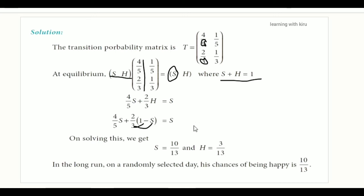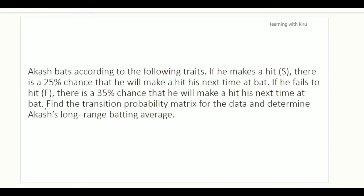The number of H value equals H divided by 3. In a selected day, there is a chance to find happy or sad states. The value is 10 by 13. If you have a chance, you have 25% chance; if you have another chance, you have 35% chance. The batting average is exactly the same. That is our question.